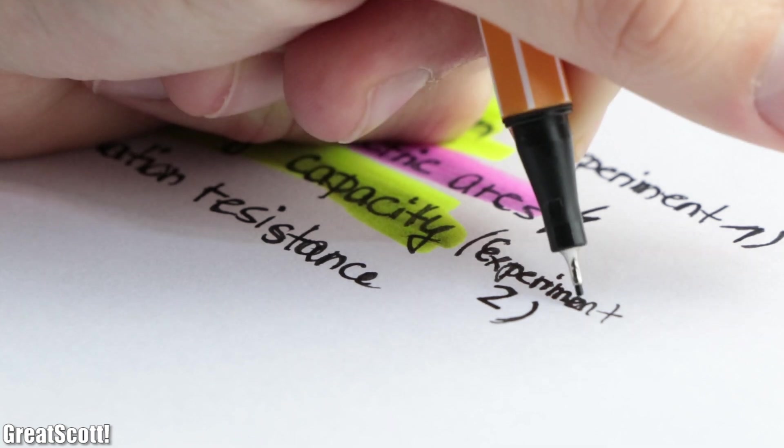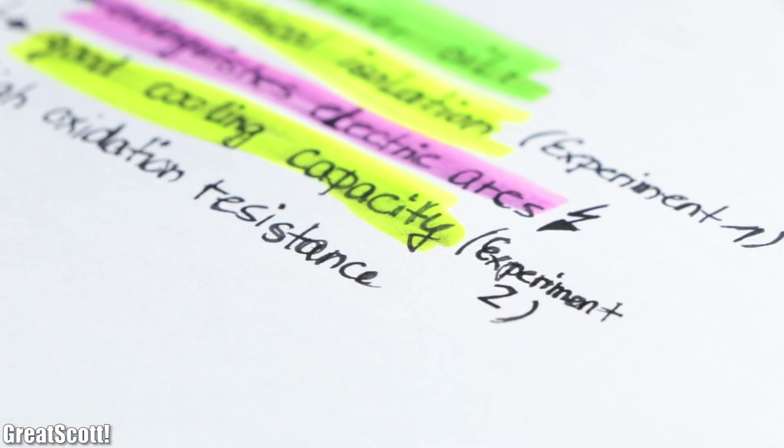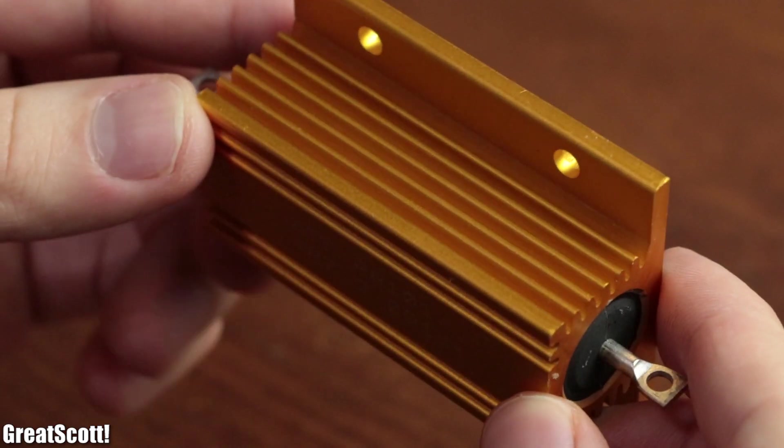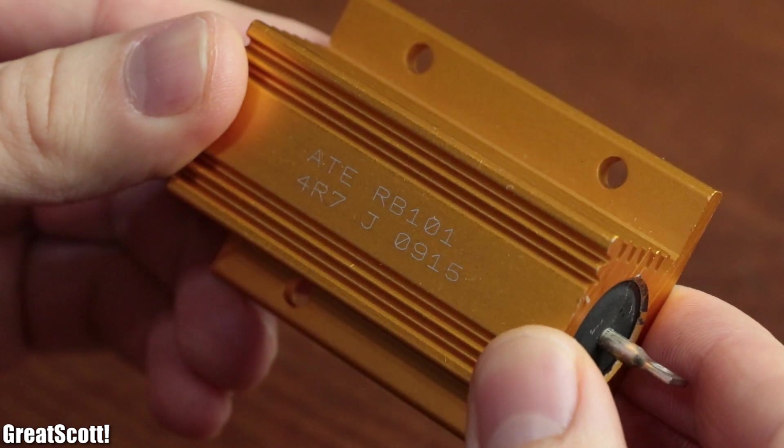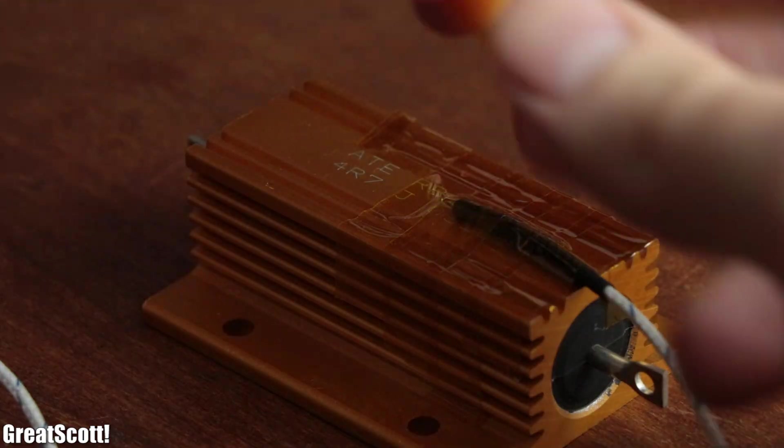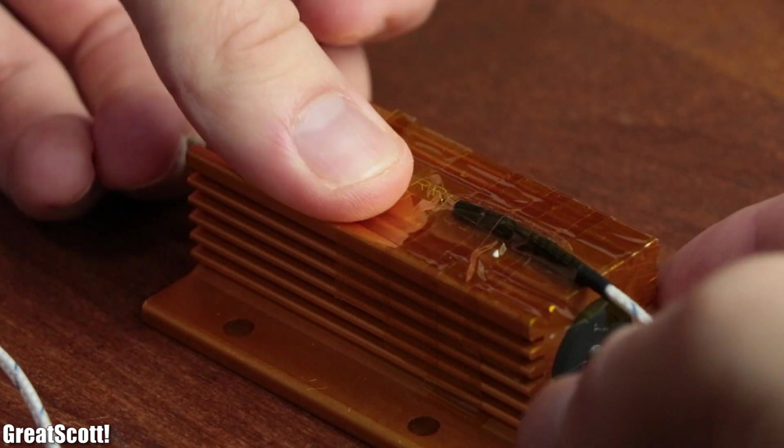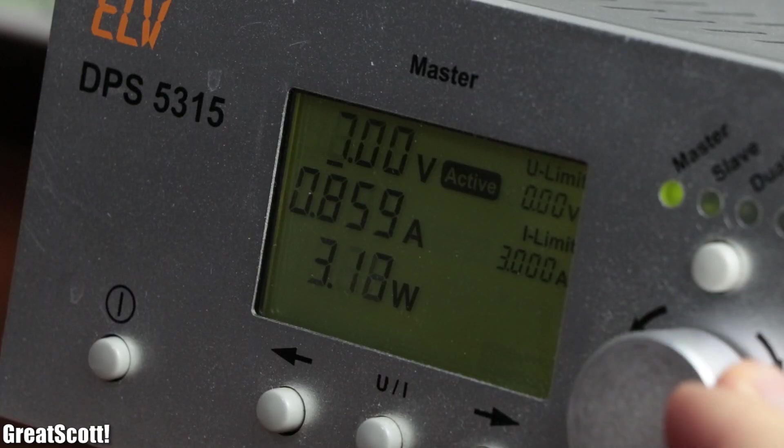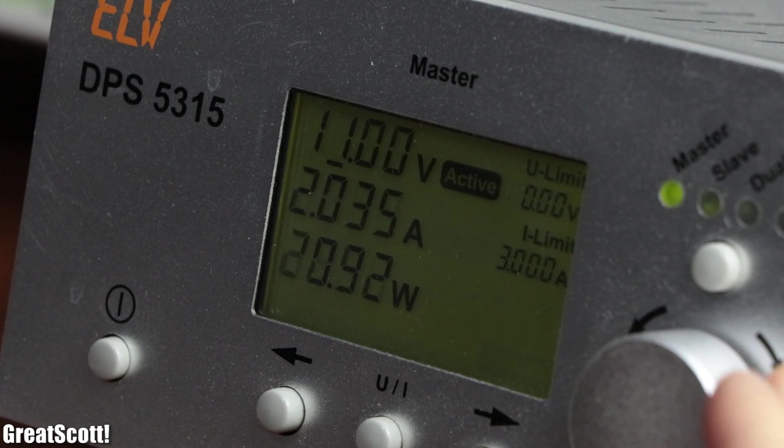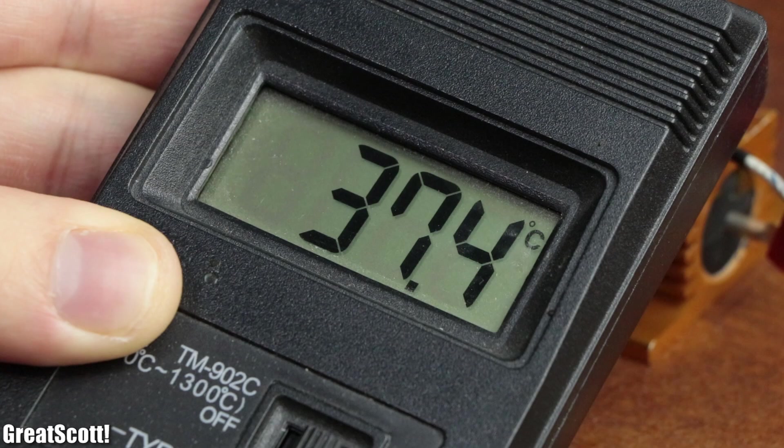But anyway, moving on to the heat dissipation test. For which I got myself this beefy 4.7 ohm, 100 watt resistor, to whose surface I secured a temperature probe with Kapton tape. During the experiment I will dissipate a constant power of around 25 watts through the resistor, which will obviously heat it up.